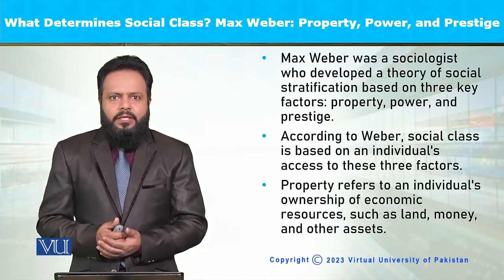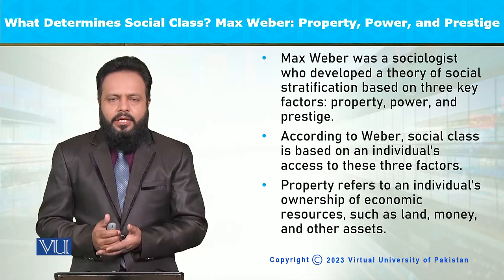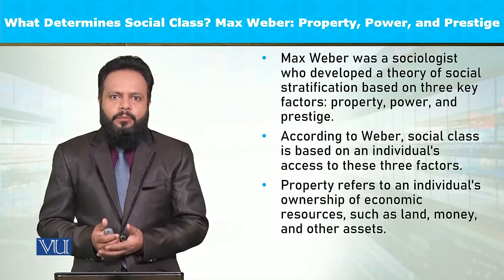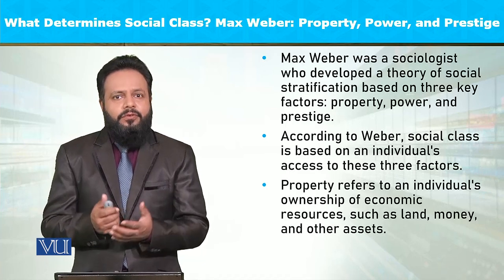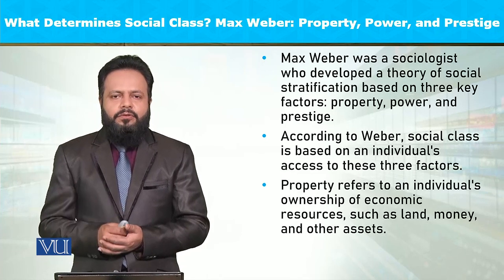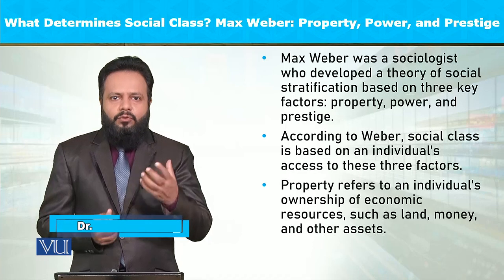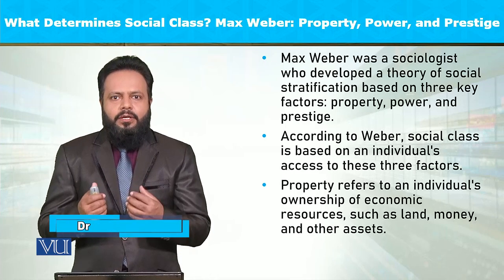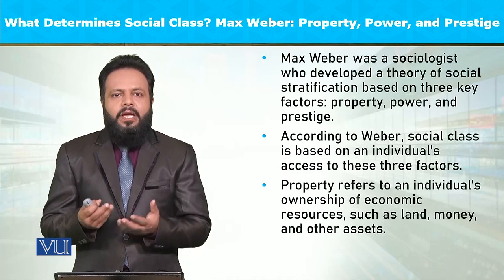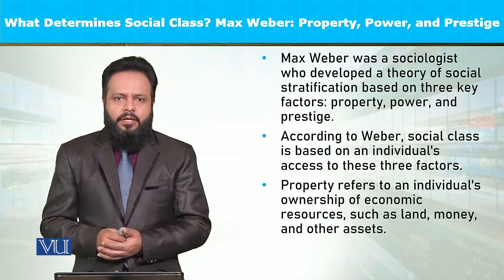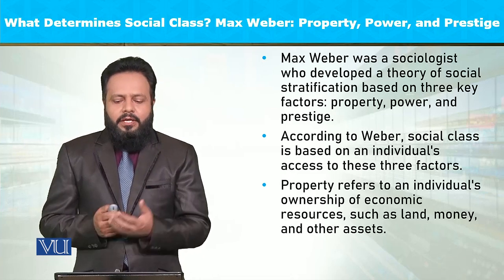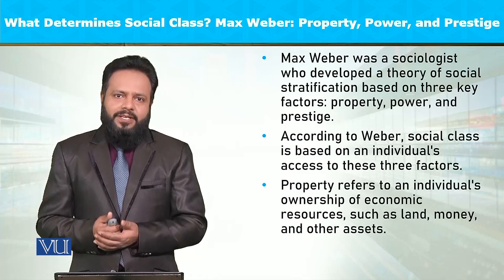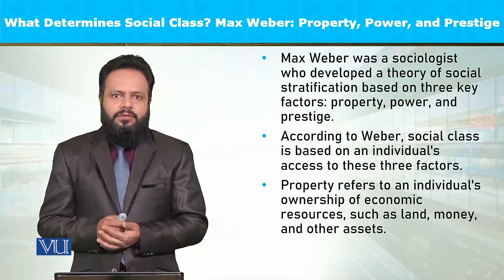Social class के उपर हमने बहुत बात की है क्योंकि ये social stratification का एक important factor है। Class-based system को हम देखते हैं कि ये potentially inequality के उपर मबनी होता है, खास तोर पे modern economic system, capitalist system में। इसमें class-based system stratification के through inequality produce करके समाज में imbalances और lesser opportunities for a certain class produce करता है। तो सवाल यह है कि social class को कौन सी चीजें determine करती हैं — कि सिर्फ economic factors हैं जिन से social class को define कर सकते हैं, या कोई और factors भी हैं?